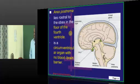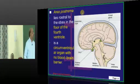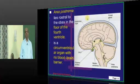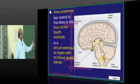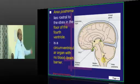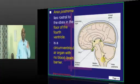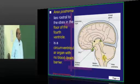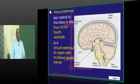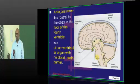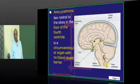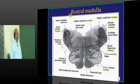Then we have the area postrema, another important structure in the medulla. It is located in the floor of the fourth ventricle. It is a classical example of a circumventricular organ without a blood-brain barrier, which constantly senses chemical changes — pH, CO2, and O2 levels in the blood are all sensed by the area postrema in the floor of the fourth ventricle in the medulla.